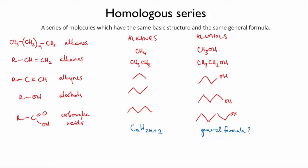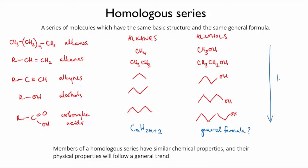Because the members of a homologous series contain the same sorts of atoms and bonding, they have similar chemical properties. And because their size gets steadily larger as you go through the series, their physical properties tend to follow trends.